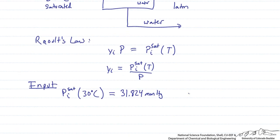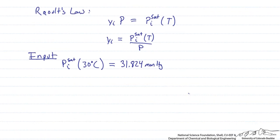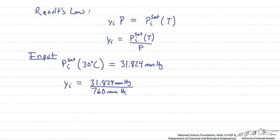Now that we have the saturation pressure of water, we can calculate the mole fraction of water in the incoming stream. yi equals 31.824 millimeters of mercury divided by our atmospheric pressure of 1 atm, which is equivalent to 760 millimeters of mercury. From this calculation we get 0.041 moles of water per total moles.